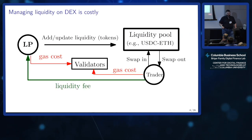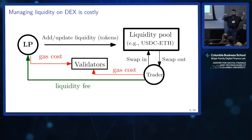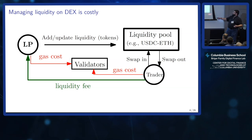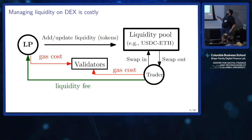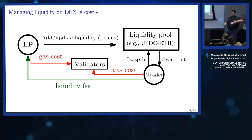How do DEXes work? You have liquidity providers on one side who mint or add liquidity to a pool — usually adding both tokens. If you want to trade dollars against ETH, you put a quantity of both into the liquidity pool and pay a gas cost to the network validators. If somebody wants to buy ETH, they put dollars in the pool and take ETH out. They pay a gas cost to the validator and a liquidity fee to the liquidity provider, which essentially stands in for the spread — to compensate for adverse selection, inventory risk, and the gas cost.